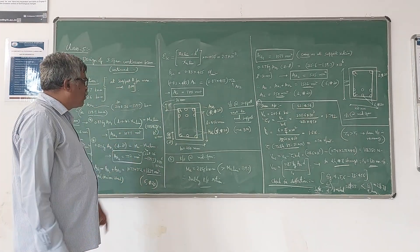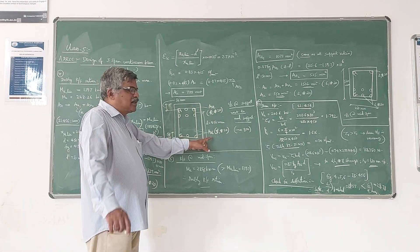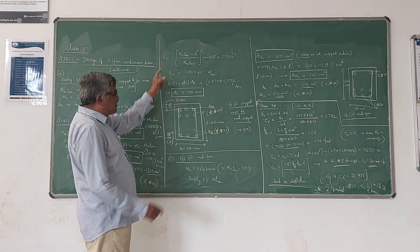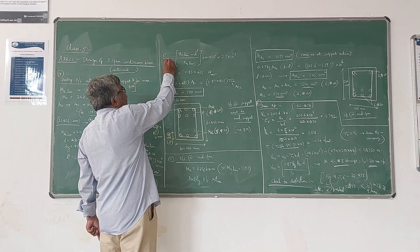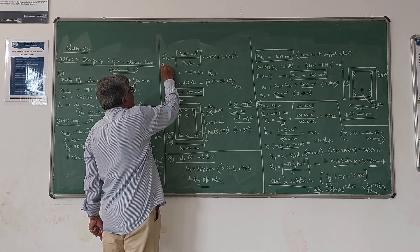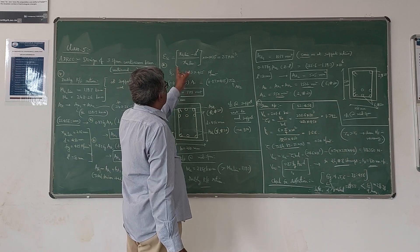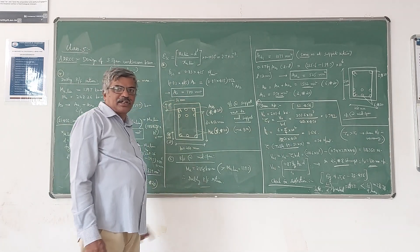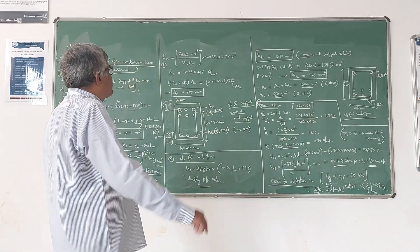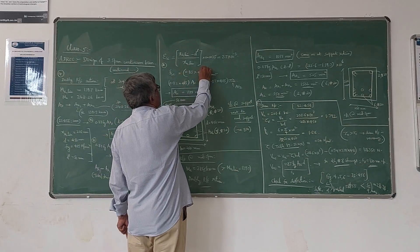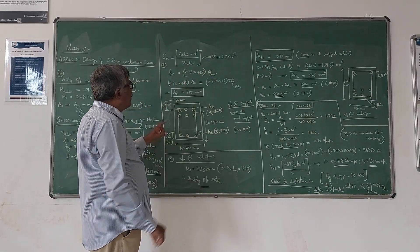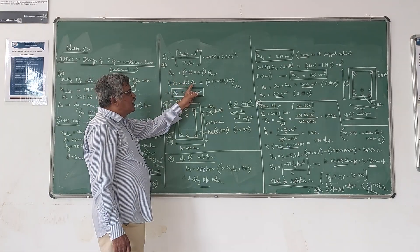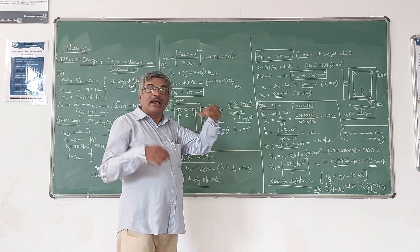Now we have to calculate the compression steel since it is a doubly reinforced section. For compression steel, the procedure is to calculate the strain at that level. The strain in compression steel ε'sc is given by the formula from IS 456. The corresponding stress in steel FSC is obtained as 0.83 times Fy, also given in the code.